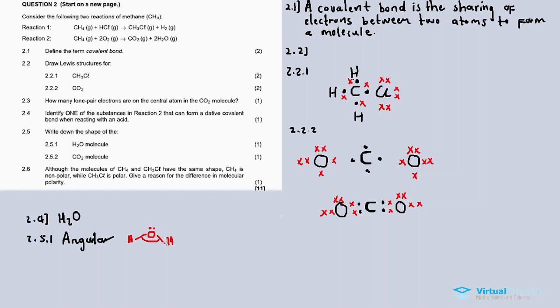For 2.5.2, the carbon dioxide molecule has a linear shape, so the angle is 180 degrees. That's why it's a linear shape.